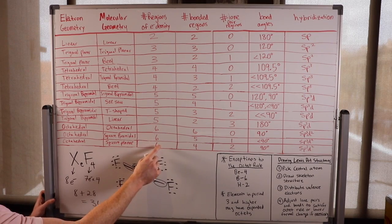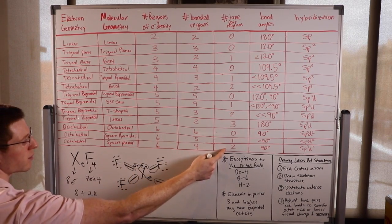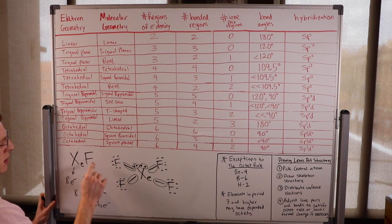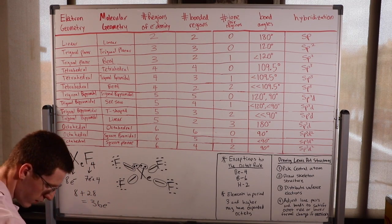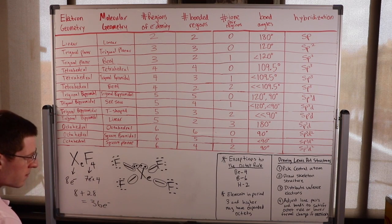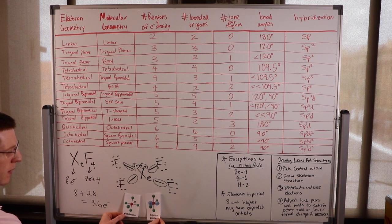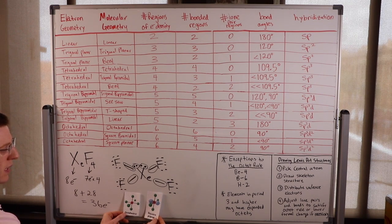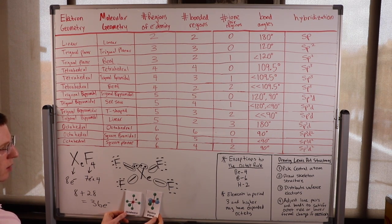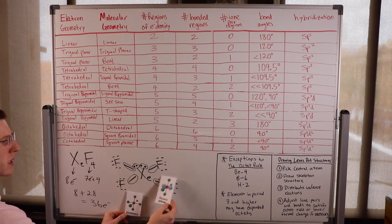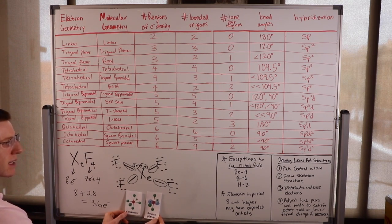We have six regions of electron density total: four bonded regions and two lone pair regions. The electron geometry started out octahedral, and then we took away two bonds and made them into lone pairs. Now it's square planar. If we just took away these two bonds, we're left with a square plane shape in three-dimensional space that maximizes the distance between all bonds. The bond angle is back at 90 degrees, and the hybridization remains SP3D2.